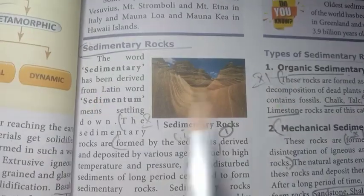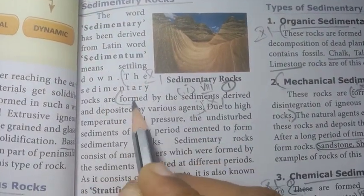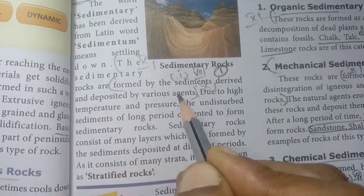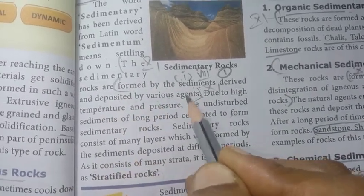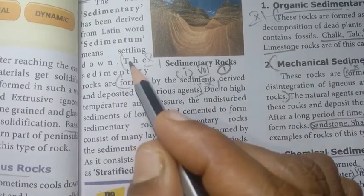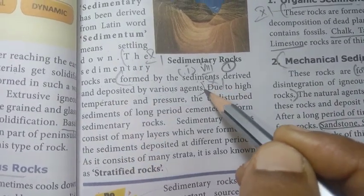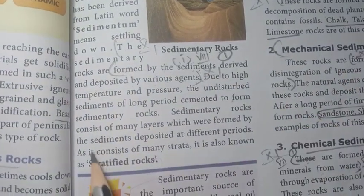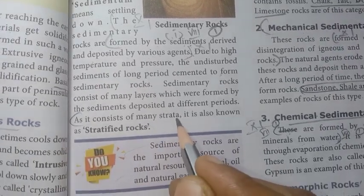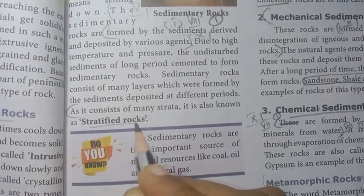Sedimentary rocks: these are formed by the sediments derived and deposited by various agents. As they consist of many strata, they are also known as stratified rocks.